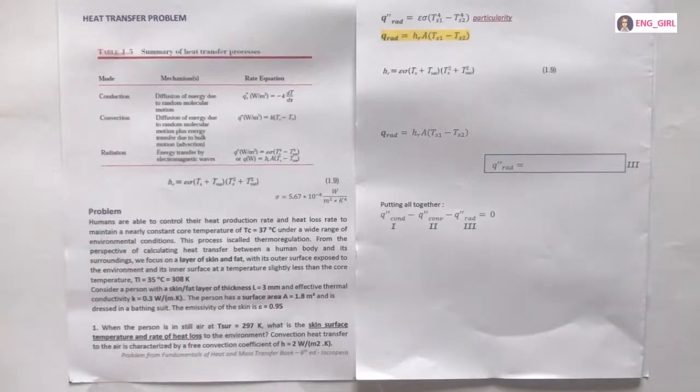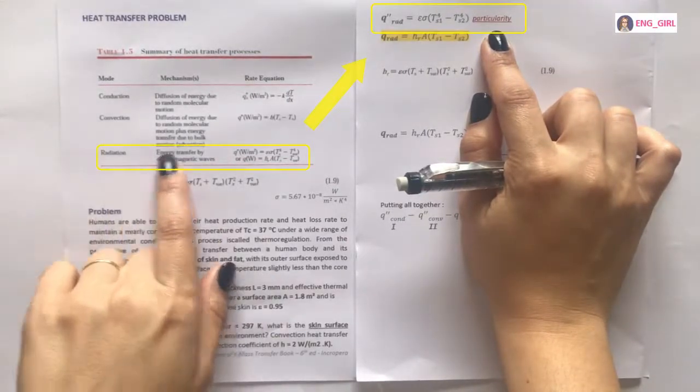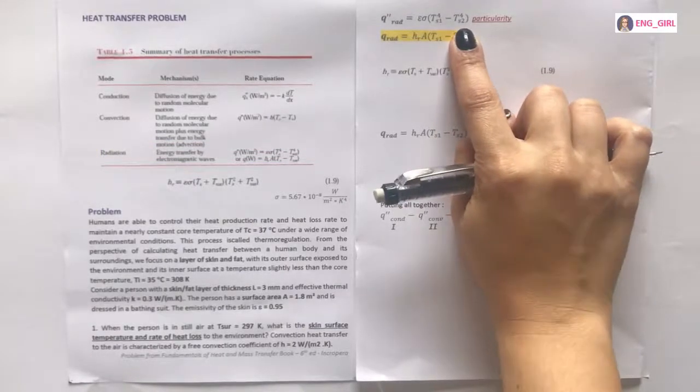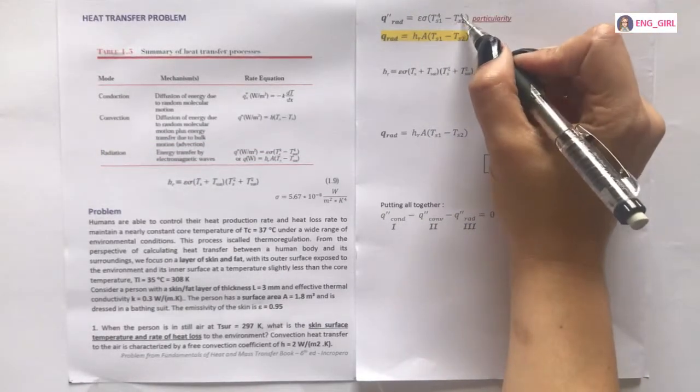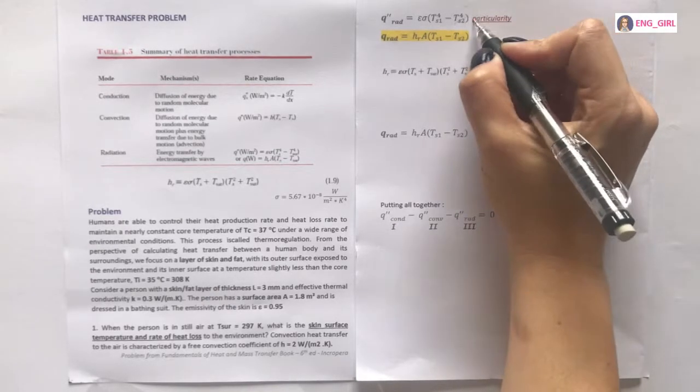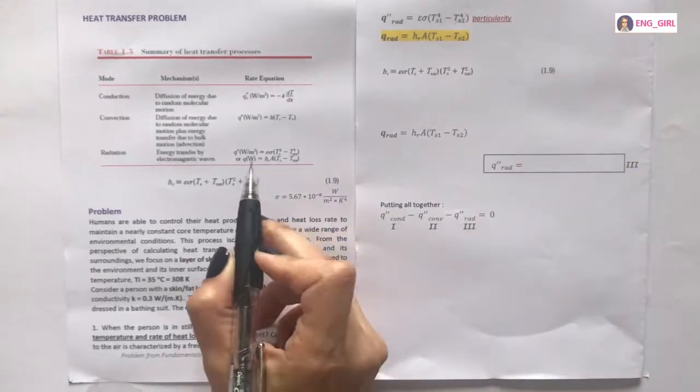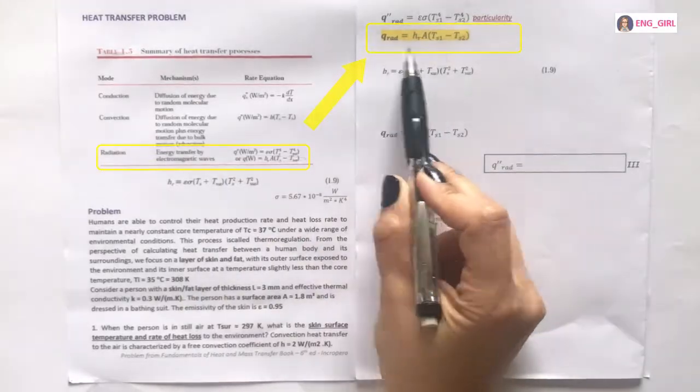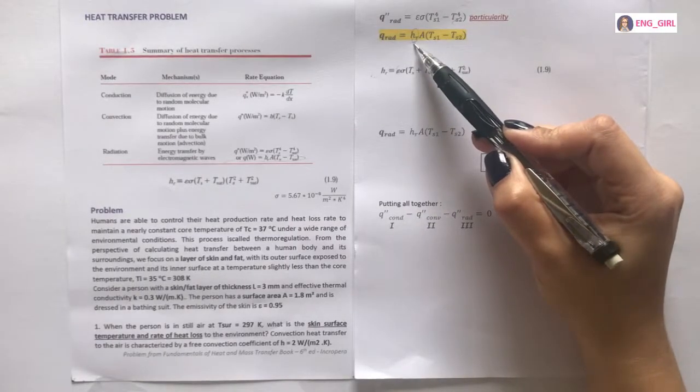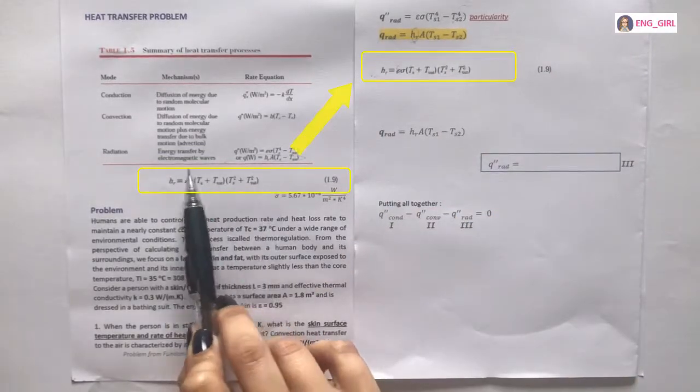So here we have a particularity. Because if you see the equation of radiation here, you can note that temperature is the fourth power dependence. That means we cannot solve for each explicit. Then we use another equation that's here to find coefficient of radiation.